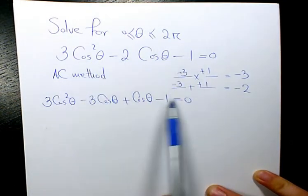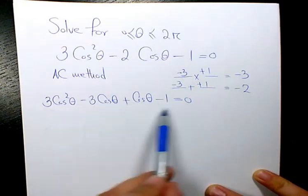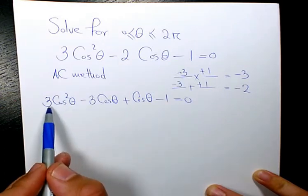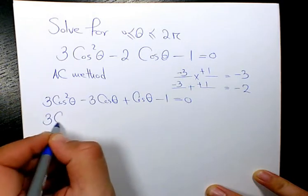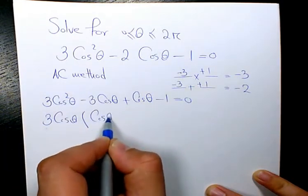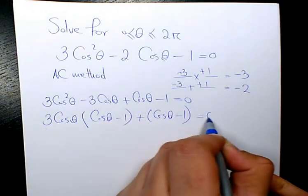So instead of 3 terms, I have 4 terms. Now I want to do group factoring, these two and these two. Group factoring here, we have 3 cosine squared minus 3 cosine theta, I factor 3 cosine theta, divided by that, it's going to be cosine theta minus 1, and here I have cosine theta minus 1 equals 0.